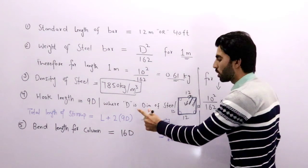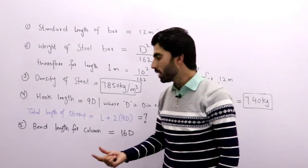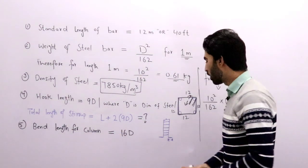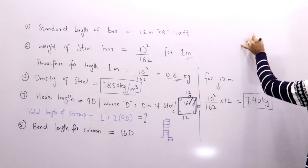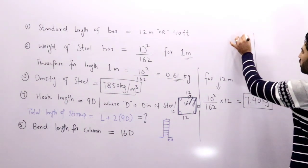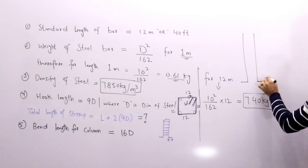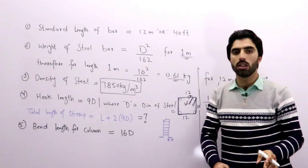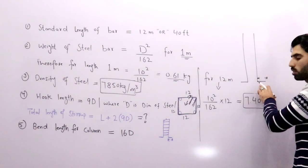Now, the fifth one is band length for column. What's the band length for column? This is our RCC column, you can see. Suppose this is column, so here at the bottom there are bands. What should be the length of band if you want to find the quantity of steel in RCC column?